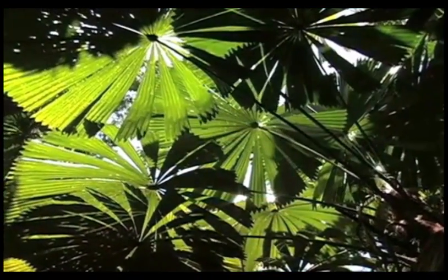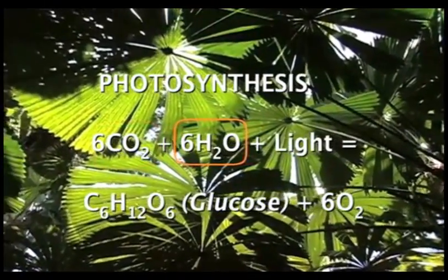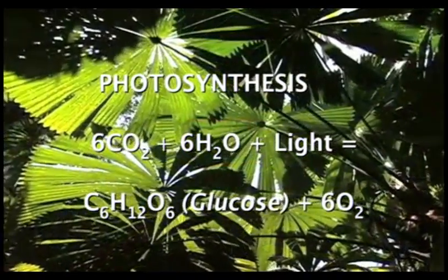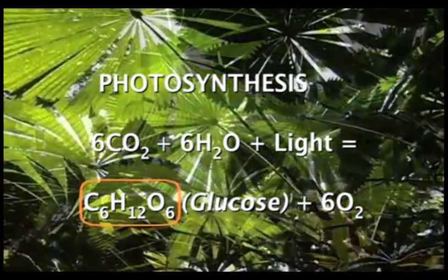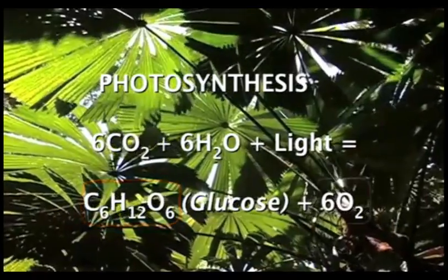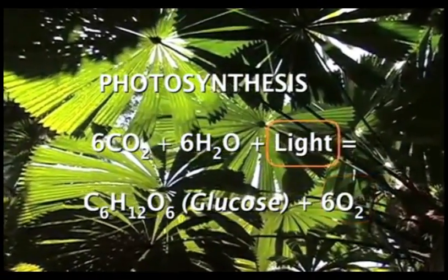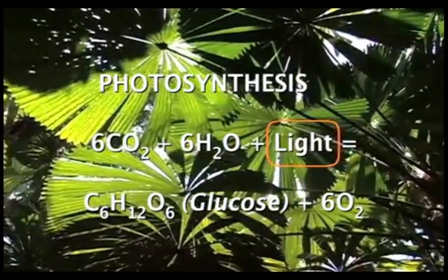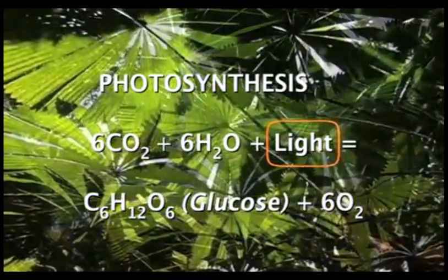During photosynthesis, six carbon dioxide molecules and six water molecules are combined to create one molecule of energy-rich glucose, C6H12O6, and six molecules of diatomic oxygen. Light energy, as well as light-harvesting chlorophyll molecules, are required to make this reaction possible.